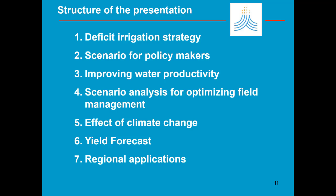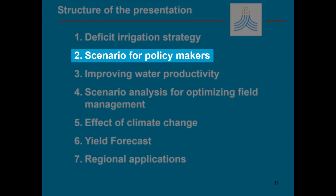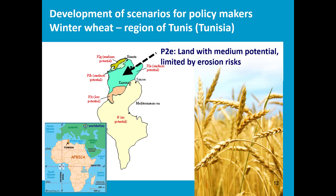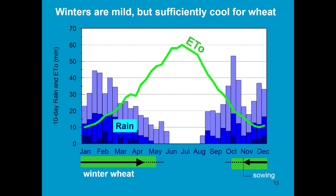In this part of the training module, we look at how AquaCrop can develop scenarios for policymakers. An example is worked out for winter wheat, which is cultivated in the region around Tunis. It is a rain-fed crop, sown in November-December, which can survive with the winter rains. The winters are mild and sufficiently cool for wheat.